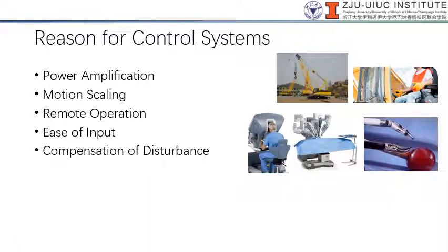Now let us understand why there is a need to implement control systems. There are basically a few reasons. First is power amplification — a very common example is a crane operator who may not be strong enough to lift heavy loads, but by using a control system, he can give commands through a control stick and create powerful motion. That is power amplification.